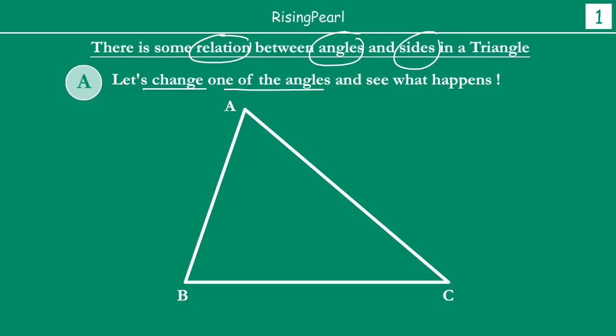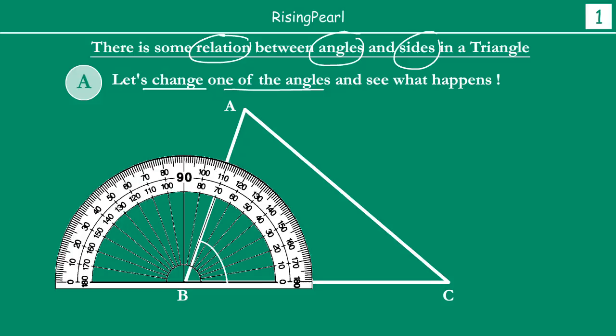I have drawn a triangle ABC here. First of all, we are going to measure angle B and then we are going to change this angle. We have put a protractor here and angle B is 70 degrees. So let us write angle B as 70 degrees.